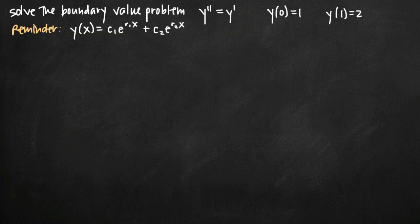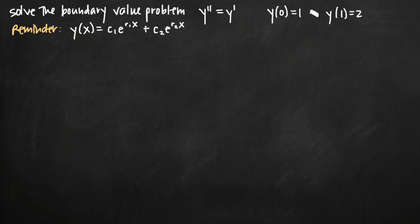Today we're going to be talking about how to solve a boundary value problem. We've been given the equation y double prime equals y prime, along with two initial conditions: y(0) = 1 and y(1) = 2. A boundary value problem is really the same as an initial value problem except that it isn't guaranteed to have a solution. With an initial value problem, given enough conditions, we'll always find a solution — in a boundary value problem that's not necessarily the case. What we're trying to do is solve for the constants c₁ and c₂, but given these initial conditions that may not be possible.